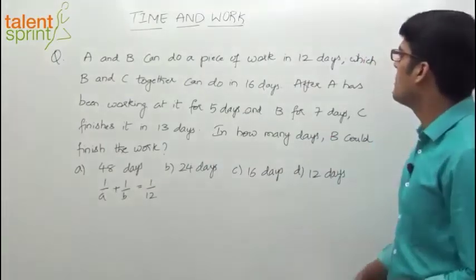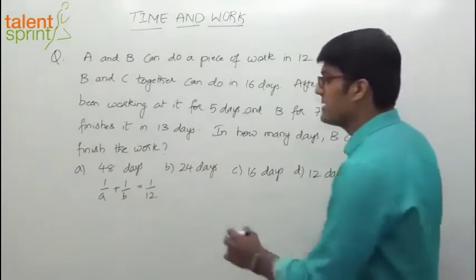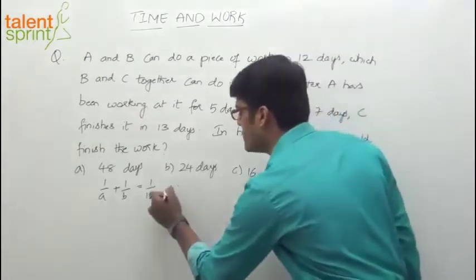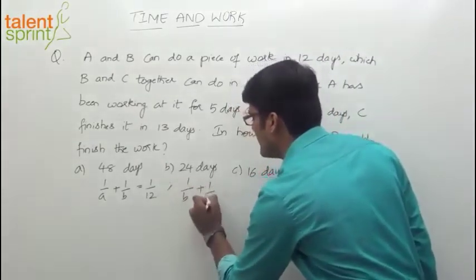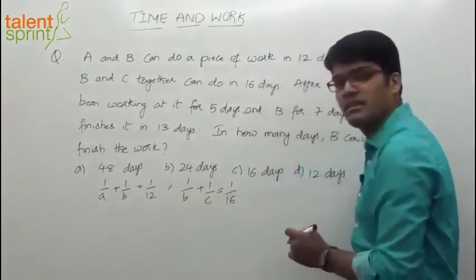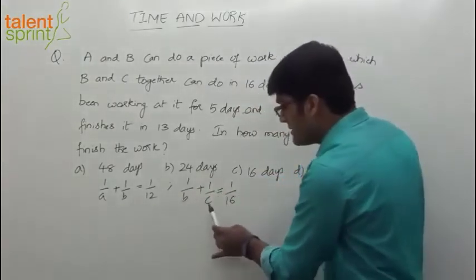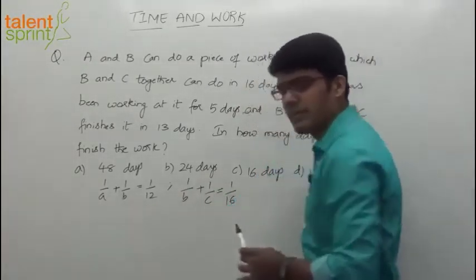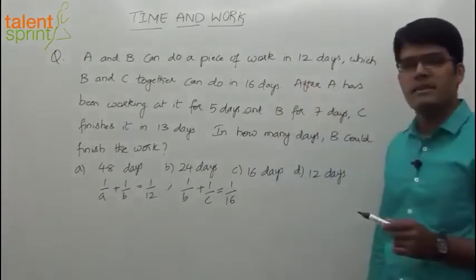So A and B can do a piece of work in 12 days which B and C together can do in 16 days. Now B and C can do it in 16 days, means what? 1 by B plus 1 by C equals to 1 by 16. B is the number of days required by B, C is the number of days required by C, A is the number of days required by A.